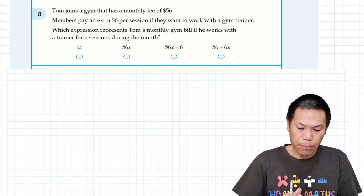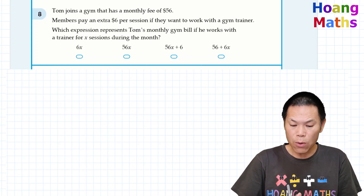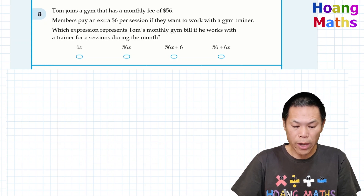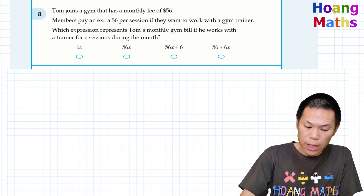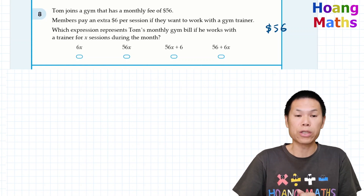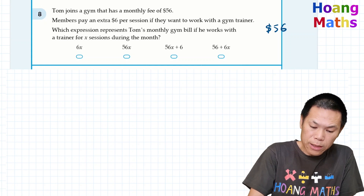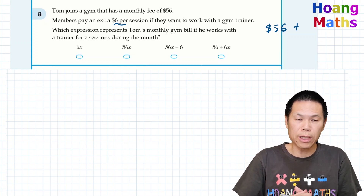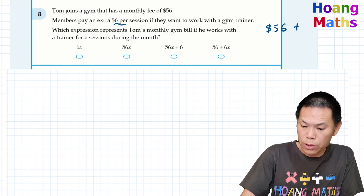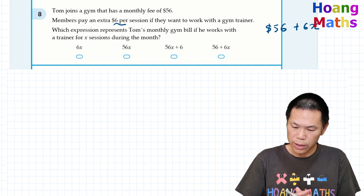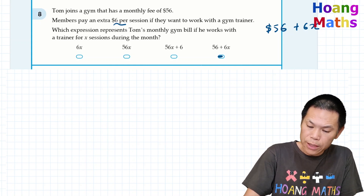Question eight: Tom joins a gym with a monthly fee of $56. Members pay an extra $6 per session if they work with a gym trainer. Which expression represents Tom's monthly gym bill if he works with a trainer for X sessions? Tom always pays $56. For X sessions, he pays an additional $6 per session, so that's 6 times X, or 6X. The expression is 56 plus 6X.